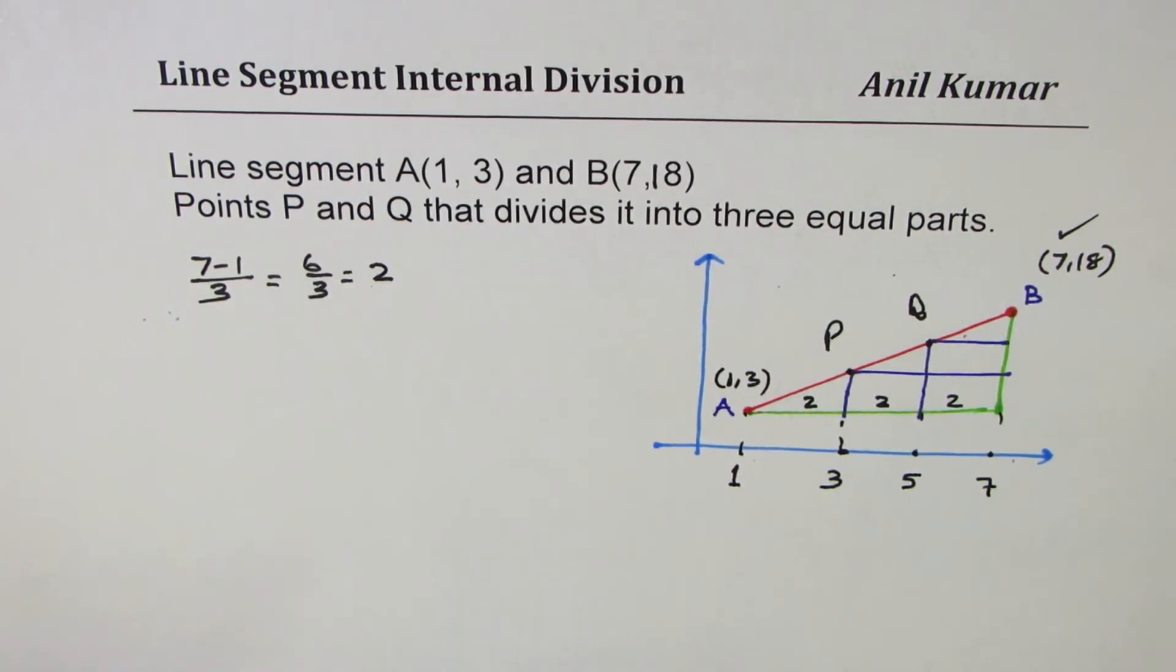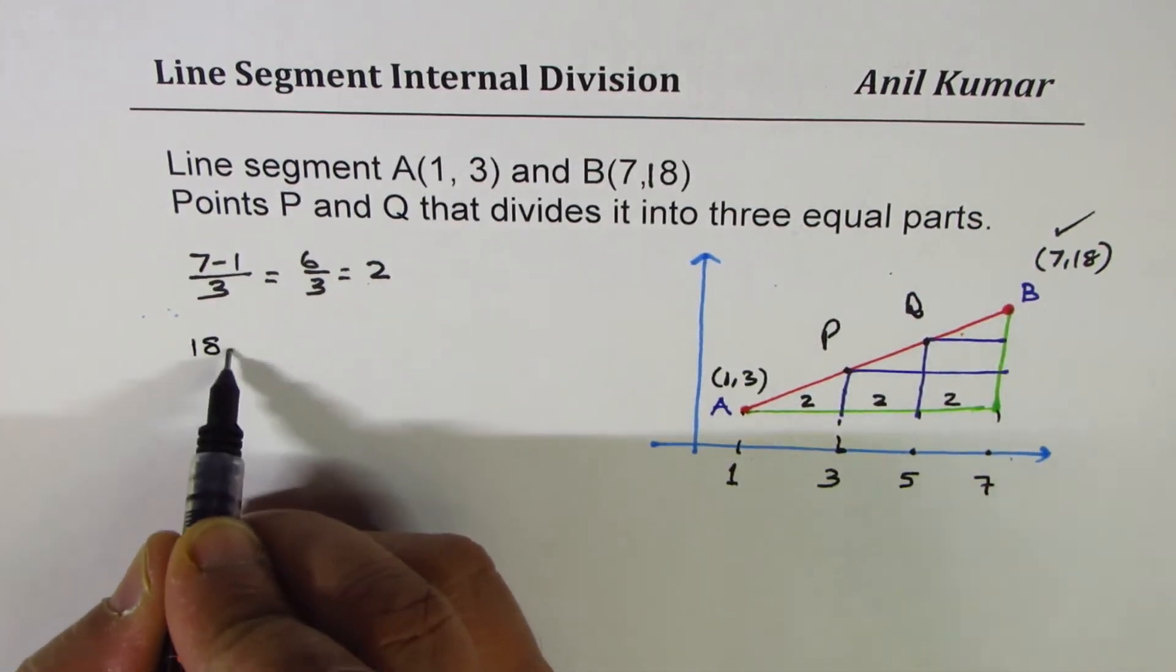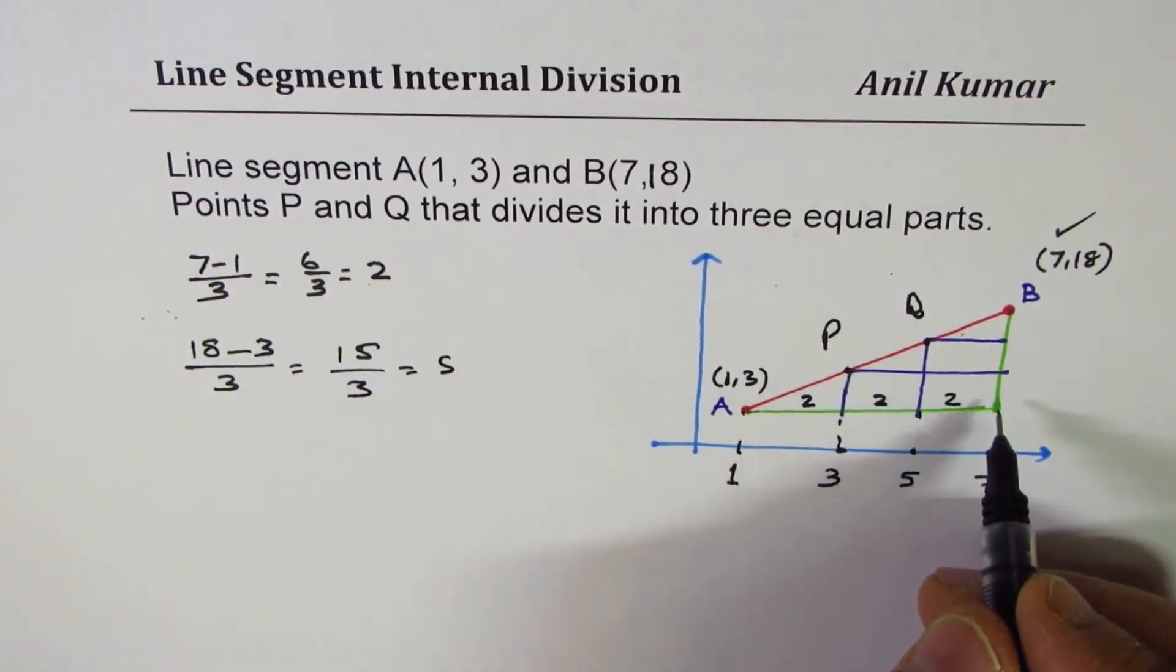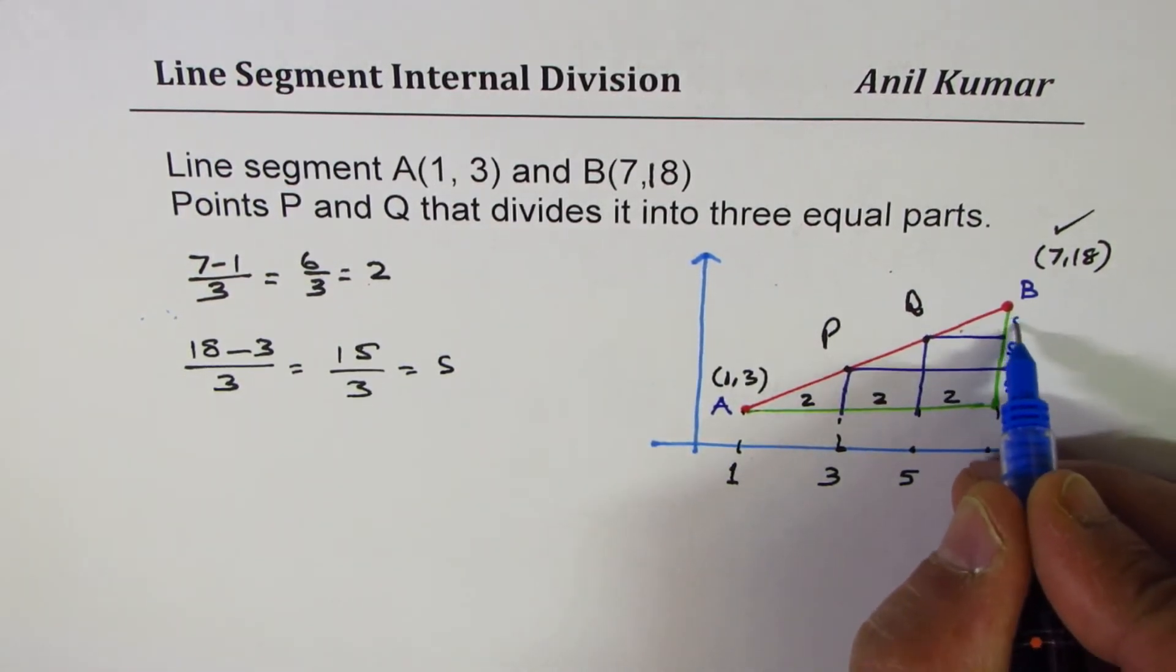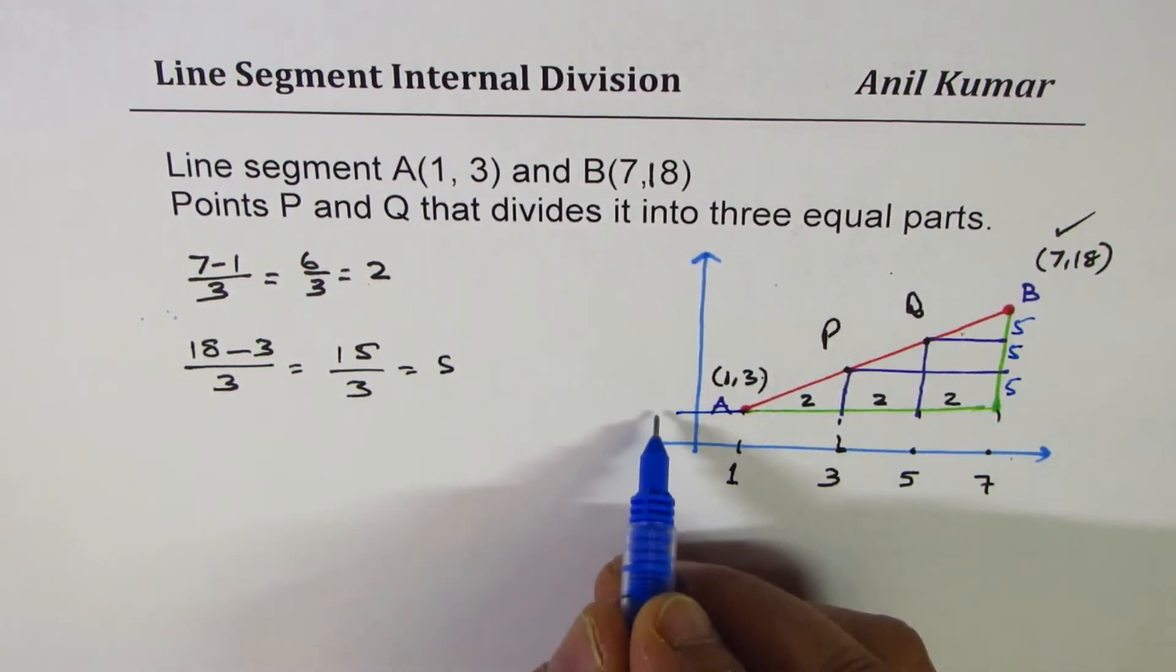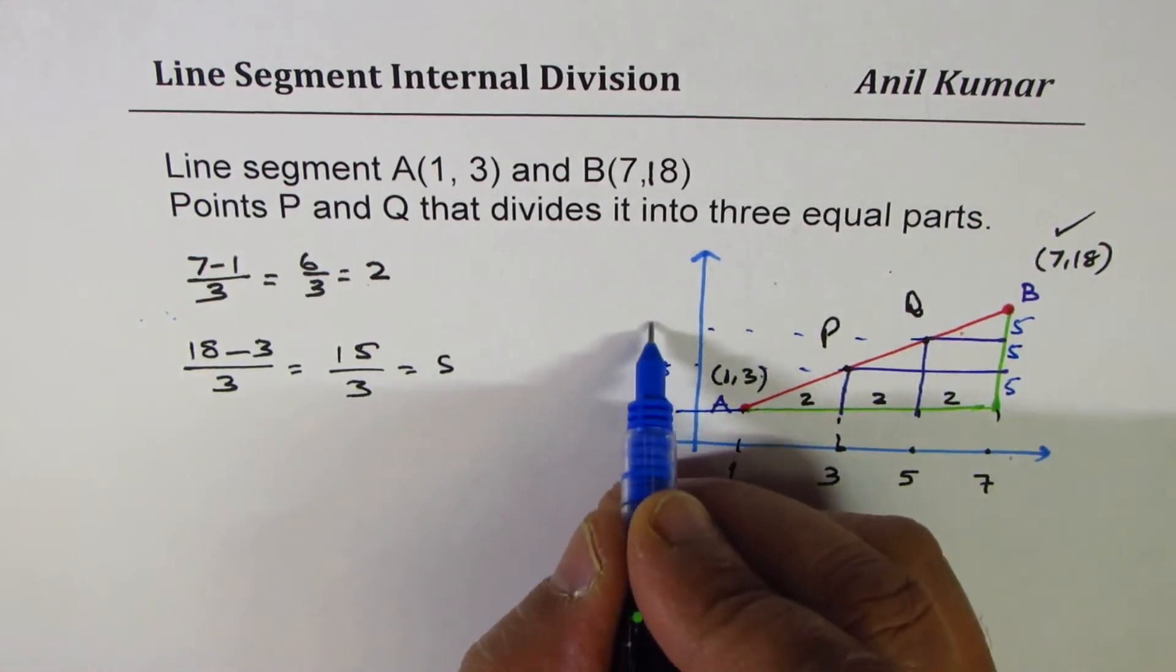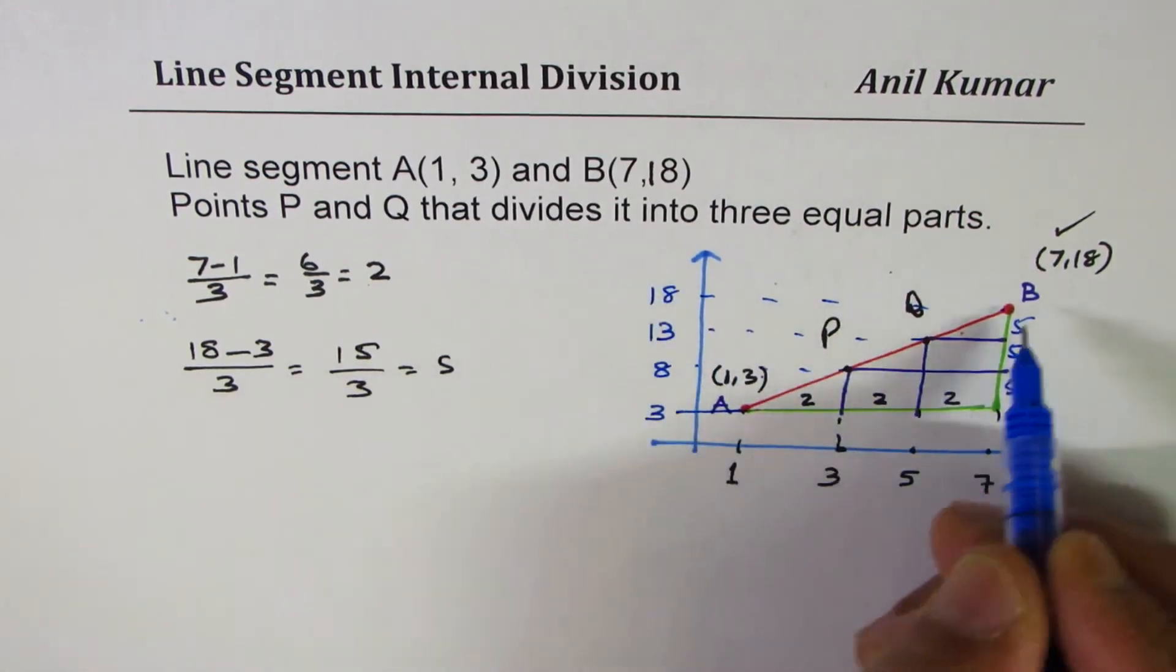Now, let's look into the y values. Y value is 18, so it is 18 minus 3 divided by 3, it is 15 divided by 3 which is 5. So, each unit is 5 above. This is 5, 5 and 5 above this point, 3. From 3, if you go 5 above, 5 plus 3 is 8 and another 5 will 13 and next 5 will take you to 18. That makes sense.